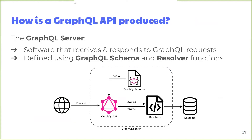Thanks, Jordan. I'll start my section by talking about what goes into making a GraphQL API. The first thing is that you need a GraphQL server to serve the API. The server is responsible for receiving and responding to GraphQL requests. In a GraphQL server, the functionality is specified or defined by two main components: the schema and the resolvers. At a high level, the schema defines what the GraphQL server can do, and the resolver functions tell the server how to do it — specifically, how to fetch the data from the database.